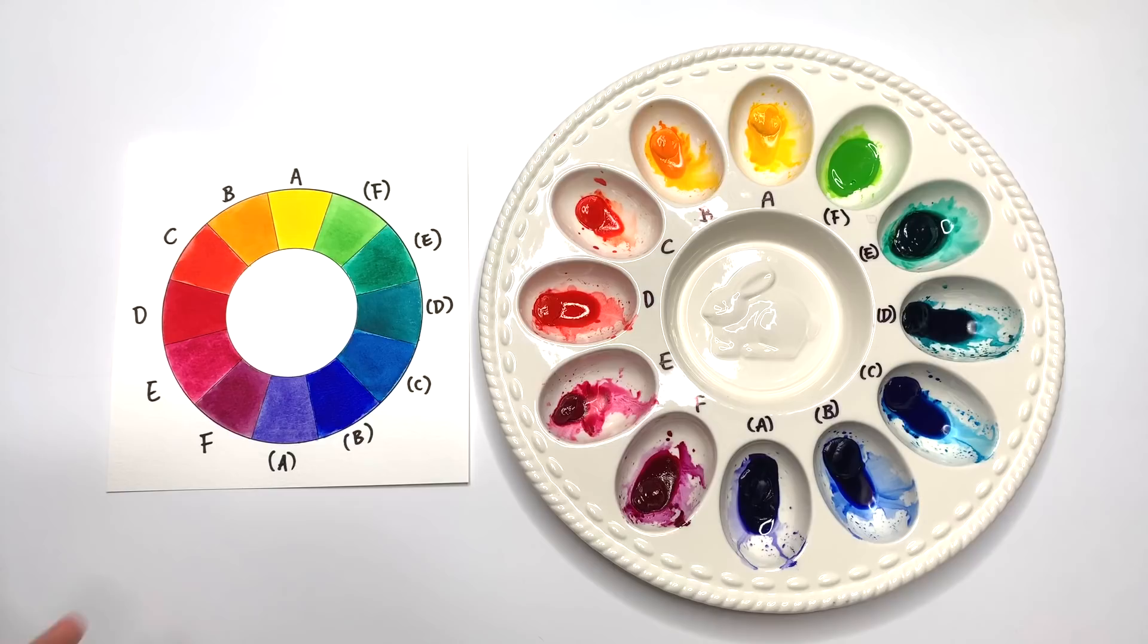Welcome to episode 4 of the Color Theory series. I hope you're enjoying the series so far. In this episode, we are going to talk about the first part of how to avoid making mud. We covered the color temperatures a little bit in the split primary palette, but we'll go into more detail of that in the next episode.